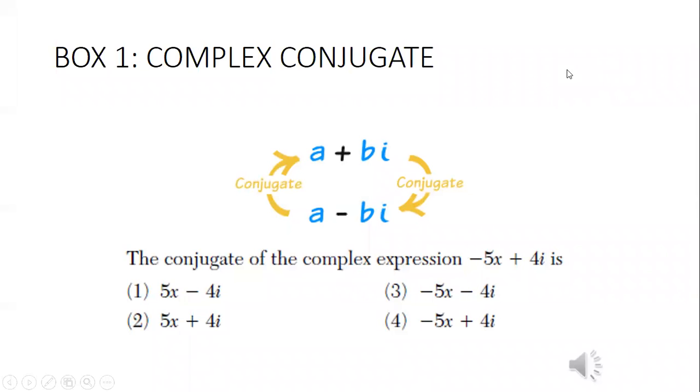So a conjugate is super easy. All you're basically doing is when you have a complex conjugate, you are not changing your coefficients. You're just changing the operation. Coefficients are staying the same, operations are changing.